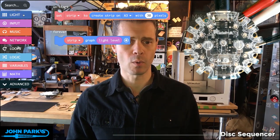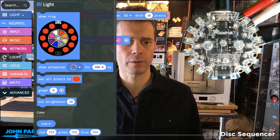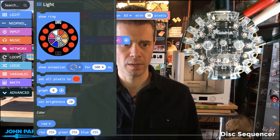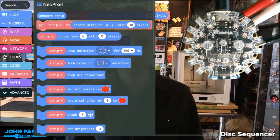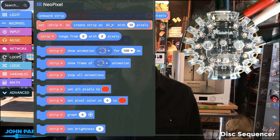If you're wondering where that is, just click on this category called Light and then this Neo Pixel category shows up. Right there we have set strip to, and it defaults to A1. I'm moving it to A3 just for fun.